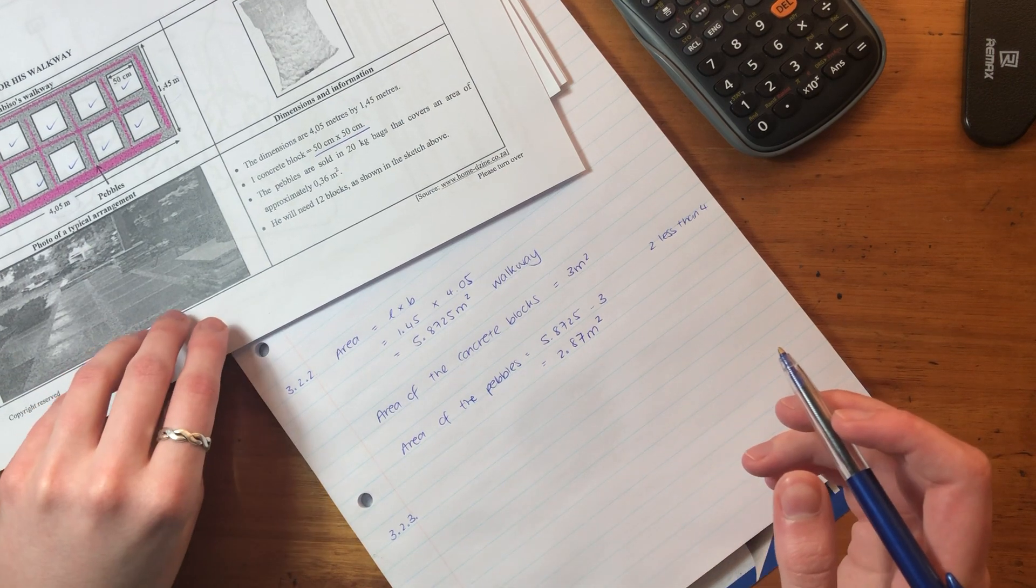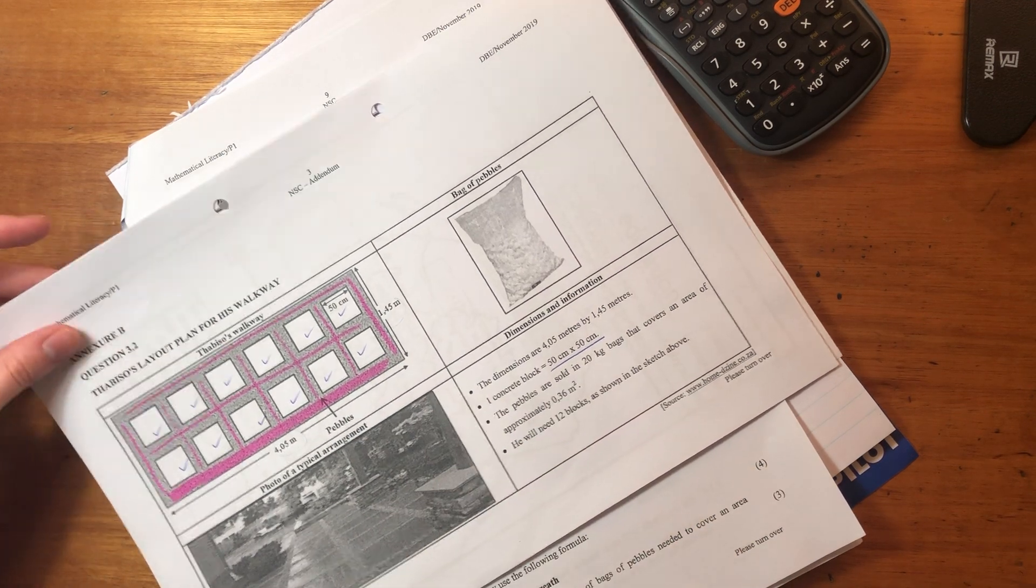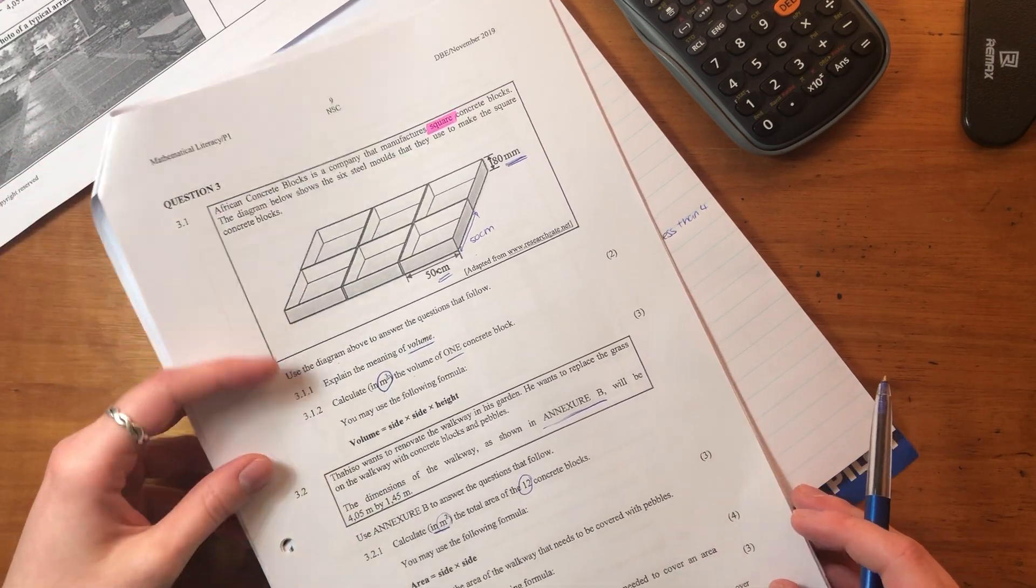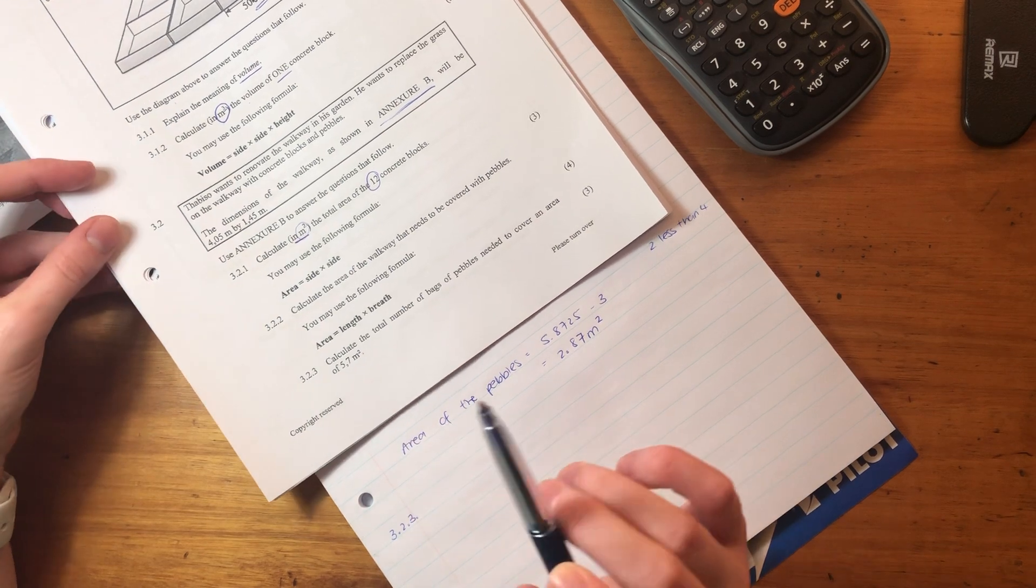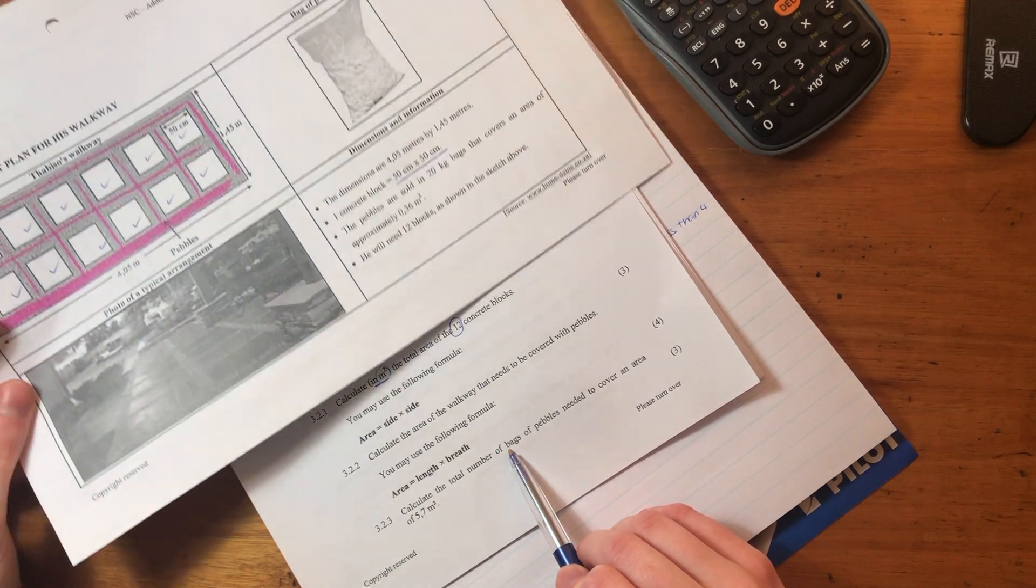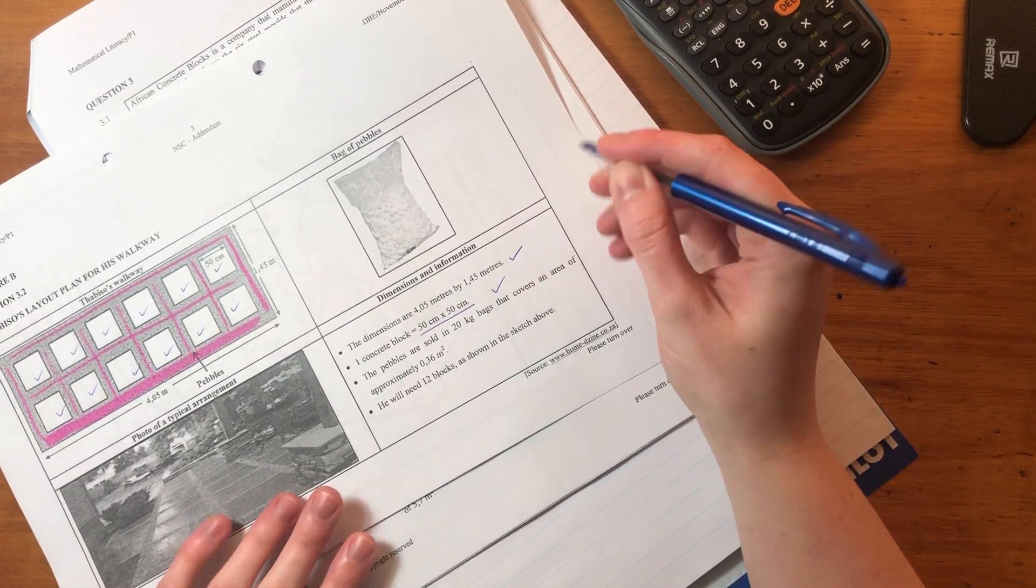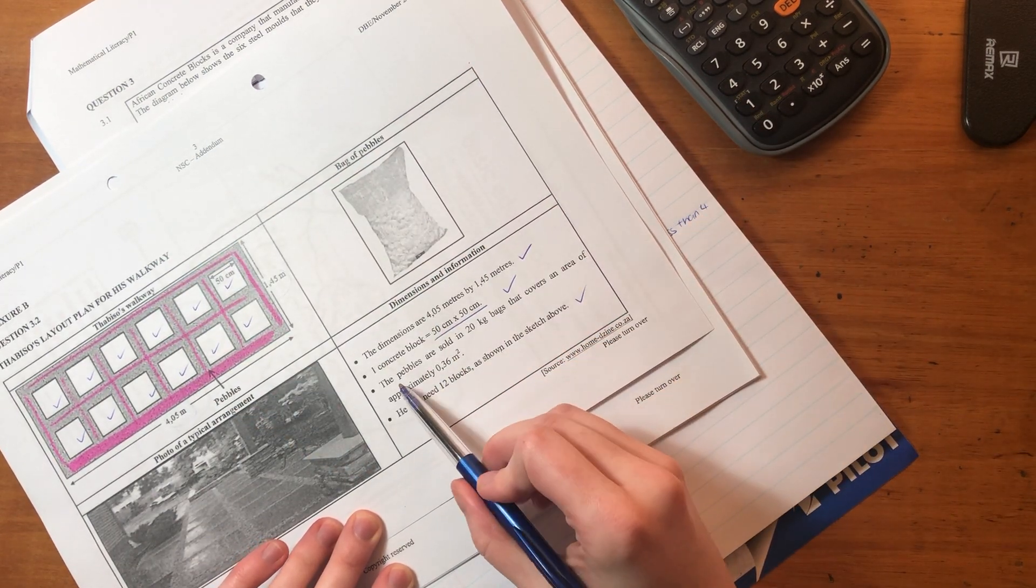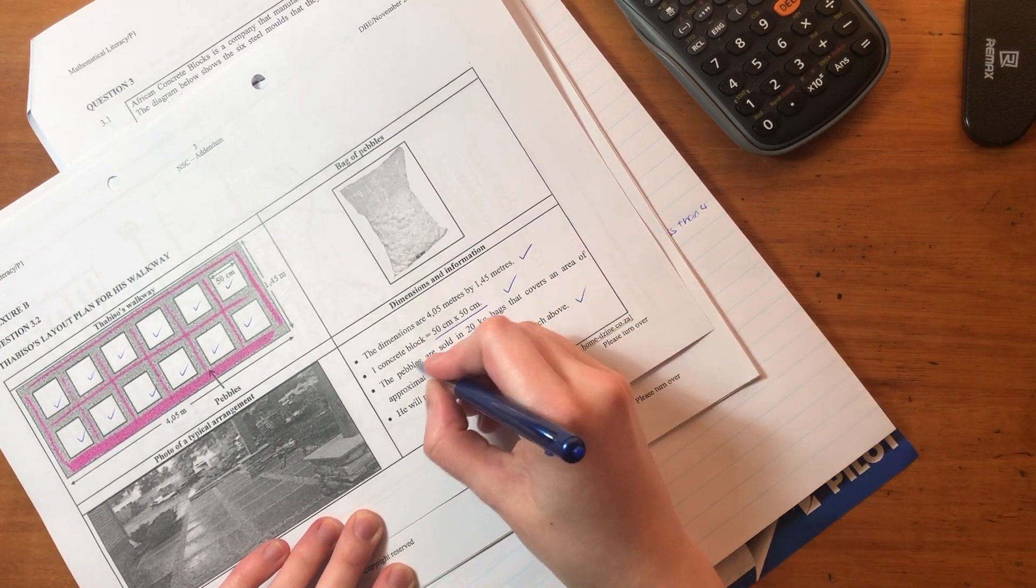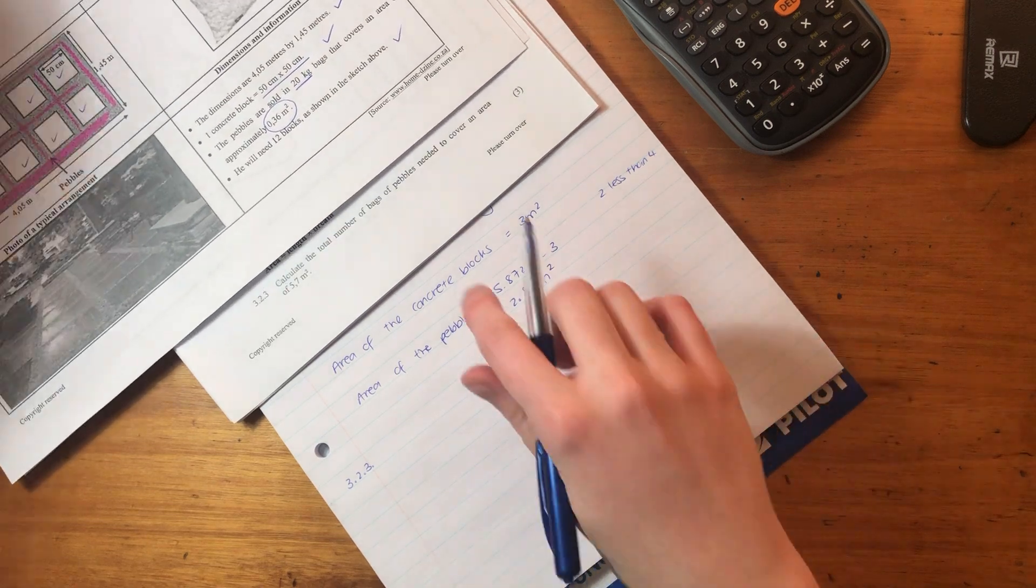So now we go to 3.2.3. Let's just recap what we've calculated. We've calculated the area of the blocks. We've calculated the area of the pebbles. So now let's see what our last question will be. It says, calculate the total number of bags of pebbles needed to cover an area of 5.7 meters squared. So what we need to know is we need to know how much one bag covers. Let's just see what other information they've given us. They've given us the dimensions of the walkway. They've said that the pebbles are sold in 20 kg bags. And each bag covers an area of 0.36 meters squared.